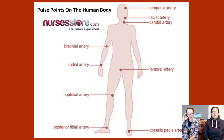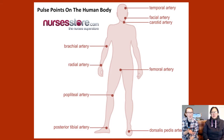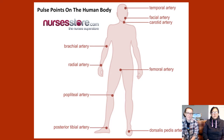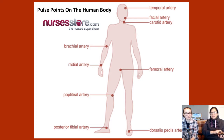This is a quick diagram on pulse points. They've come up in a prelim question before, asking where you can take your pulse. You don't need to learn them all, but know one or two. The radial artery is the easiest one — that's where you feel your wrist for a pulse.